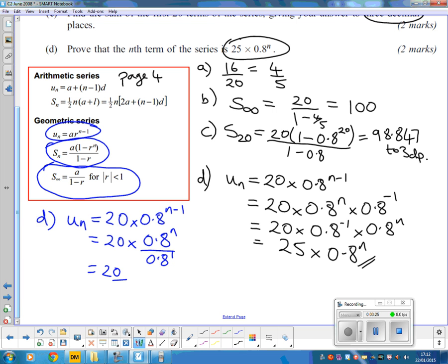That means I have 20 divided by 0.8 times 0.8 to the N, which will give you exactly the same answer, 25 times 0.8 to the N, and both are perfectly valid methods. Thank you.